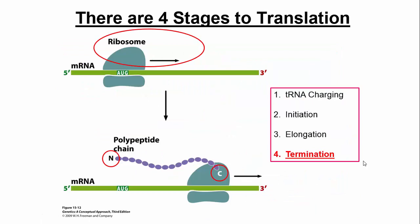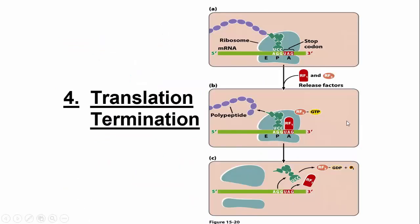The last stage is termination. Eventually on the mRNA there is a stop codon — there are usually three stop codons that exist. Once a stop codon enters the A slot, something called a release factor binds to it. I think of the release factor as analogous to a tRNA without an amino acid. Everything shifts over, but there's no new amino acid for the chain to bond to. Since there's no amino acid available, not only is the tRNA ejected, but so is the growing peptide strand, and now we have our finished protein.